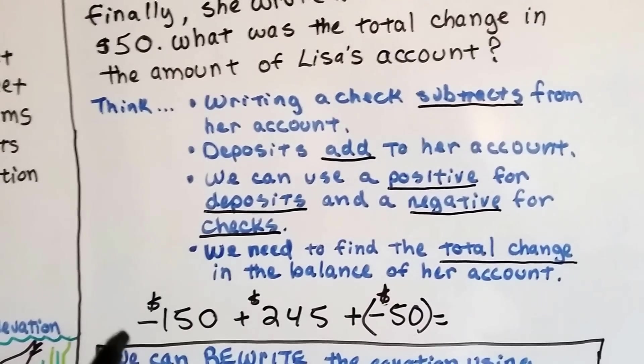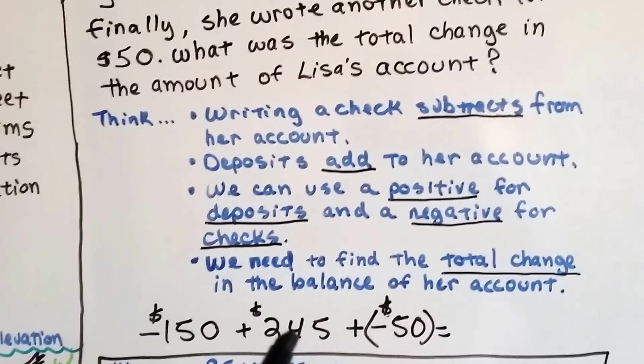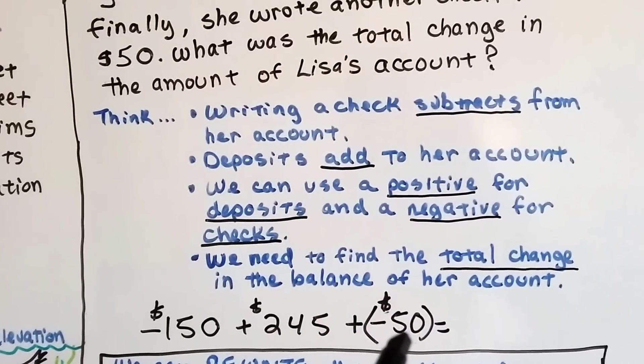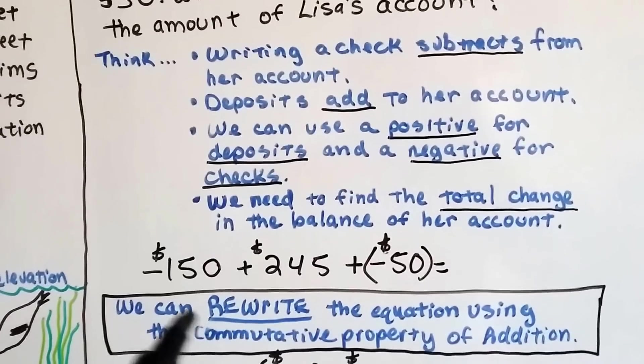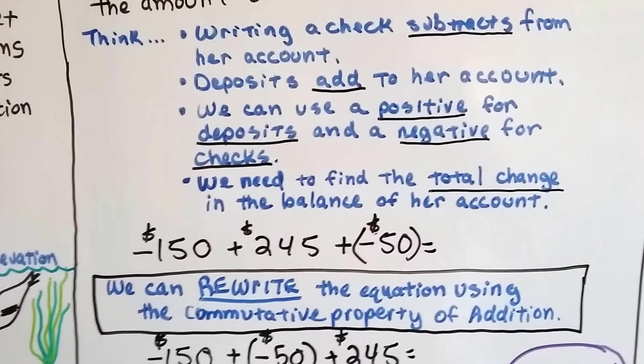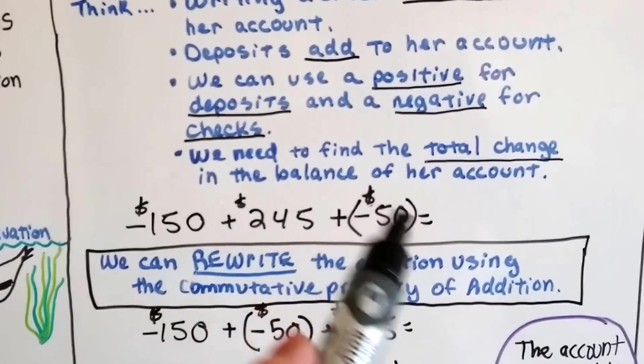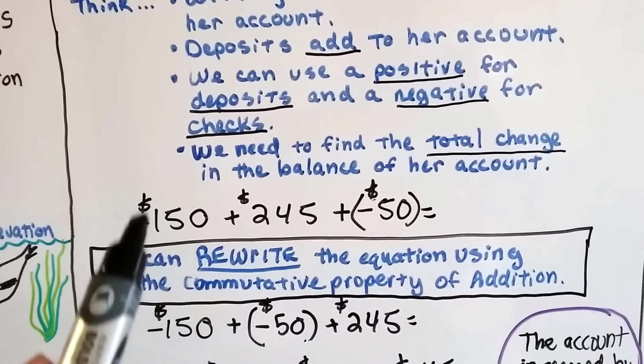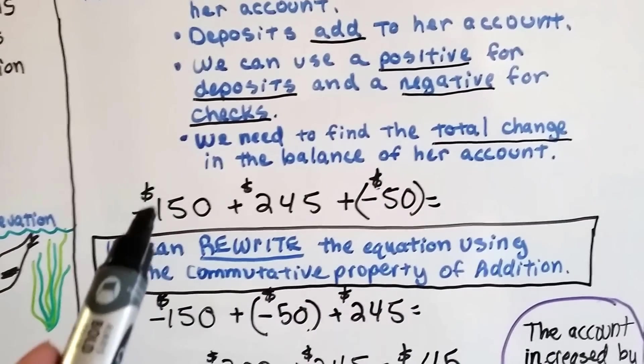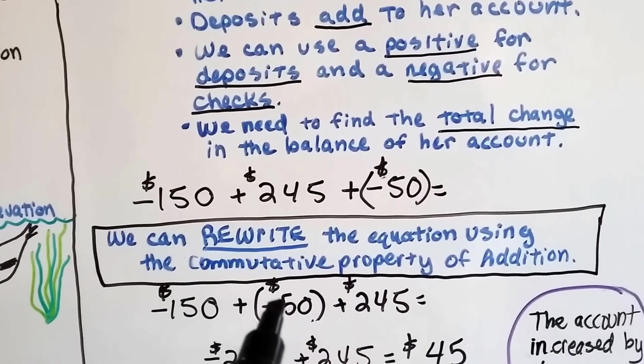Here's what we've got. Minus $150 for the first check, plus $245 for the deposit, and then we're going to add the other check of $50. So we're adding a negative $50. We can rewrite this equation using the commutative property of addition and the associative property to solve it. I look at these two and see compatible numbers right here. These are friendly numbers, $150 and $50. They'd be easy to add together. So, I'm going to move the equation around and rewrite it so that the $150 and the $50 are together.